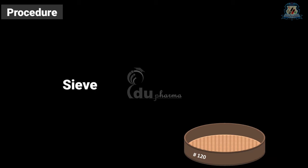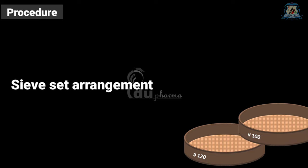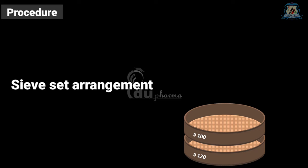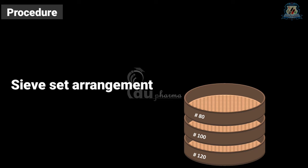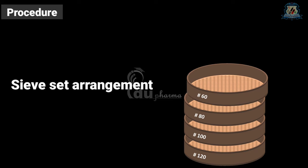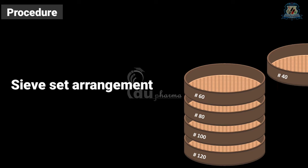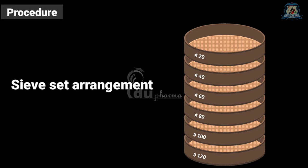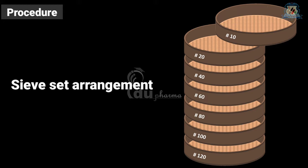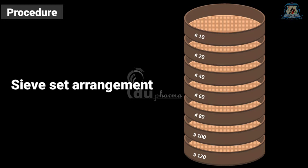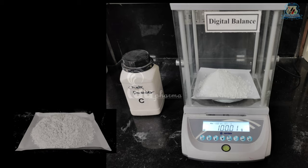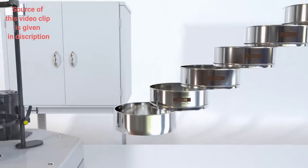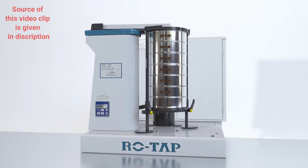Let's come to the procedure. In the first step, a set of sieves is arranged in descending order, i.e., the sieve with the least number is placed at the top and below which subsequent sieve numbers are placed. For example, number 10 is placed at the top, then 20, 40, 60, 80, 100 respectively, and 120 at the bottom. A 100-gram sample is weighed accurately and then poured on the top sieve. The lid is placed to avoid loss during shaking.